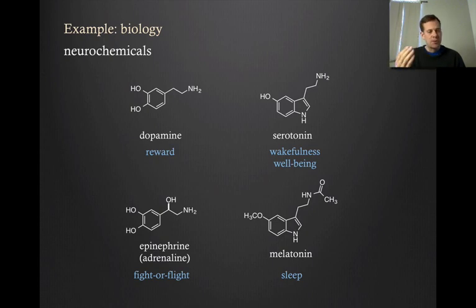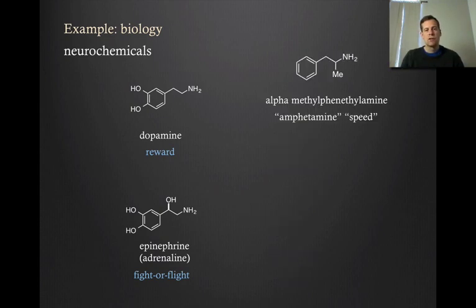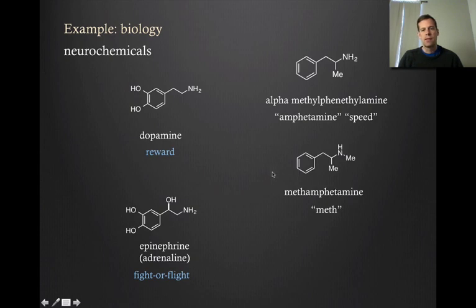It might not surprise you that if you create derivatives of some of these molecules, like these reward molecules like dopamine, you can get to molecules that have similar effects and then become illicit drugs. Things like alpha methyl phenyl ethylamine. So this very simple molecule here. If you do actually just take a few of these letters, you can create the nickname amphetamine. So amphetamine is just this molecule, otherwise known as speed. And if you were to just put a single methyl group on that nitrogen, you've got methamphetamine or meth. So if you watch Breaking Bad, this is the molecule that they were cooking up in their little trailer.